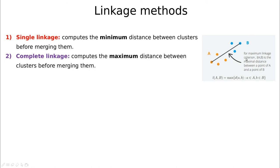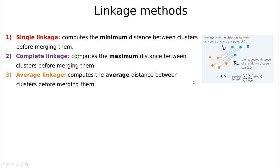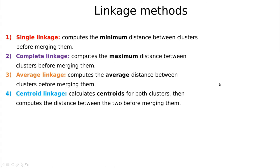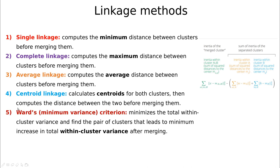Another more conservative possibility is complete linkage: to aggregate a new data point, compare using the maximum distance to each of the other points. We also have average linkage, which takes all possible distances between clusters to decide membership. We can also use centroid linkage — the centroid being the point closest to the center of mass. The most stable method is Ward's minimum variance criterion, which minimizes within-cluster variance while maximizing distance between clusters.